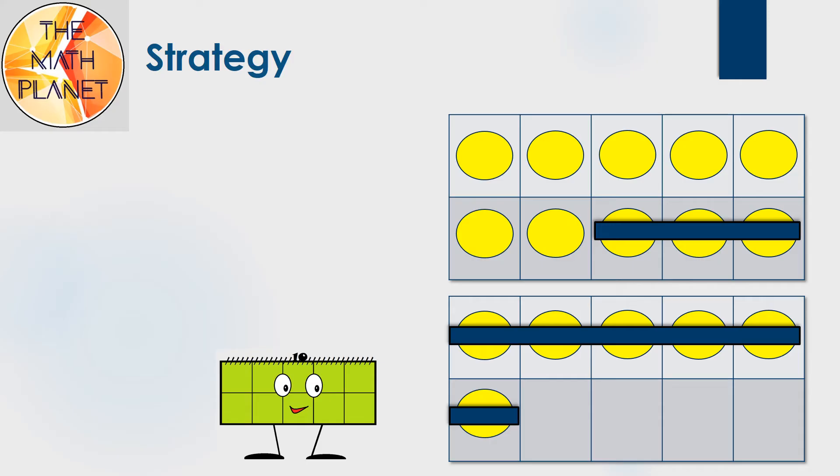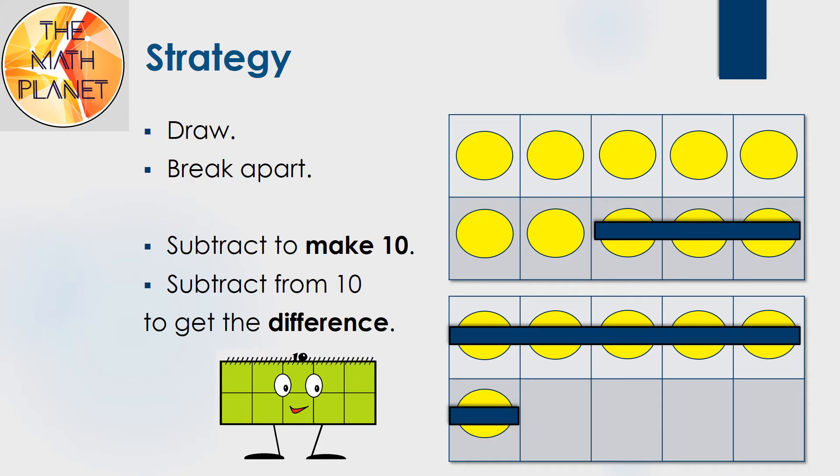The making 10 strategy works as follows. First, I draw the whole, or the number I am subtracting from. Next, I break apart the part, which is the number I am subtracting. I subtract to make 10. Then I subtract from 10 to get the difference.